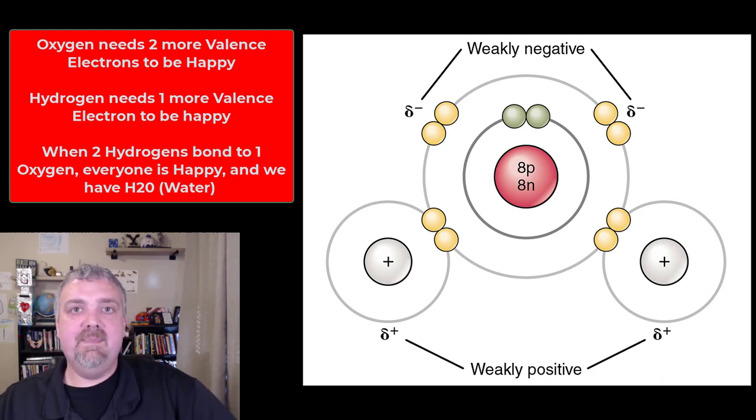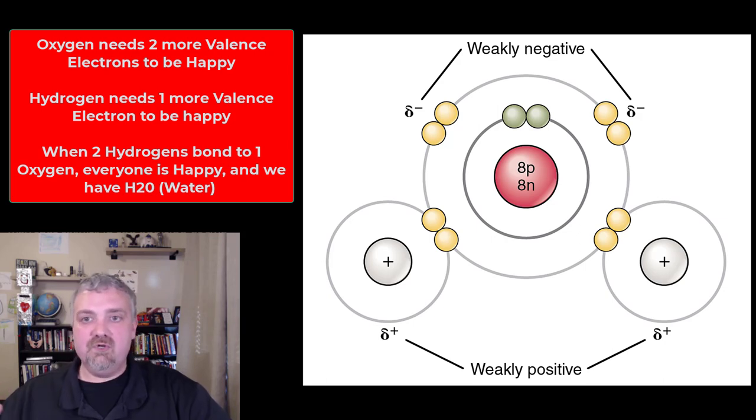Here we see an example of how these different atoms are going to either gain, remove, or share electrons to become happy. Another important term here, as we talked about why electrons are important, the most important electrons are what are called the valence shell electrons.